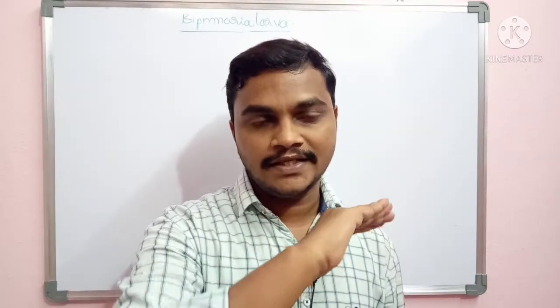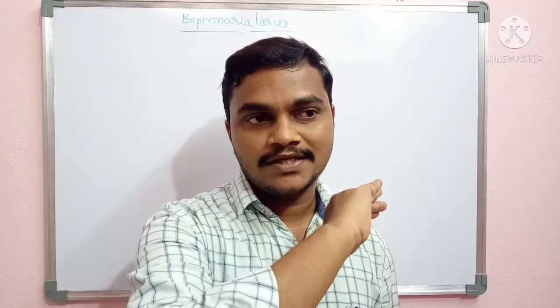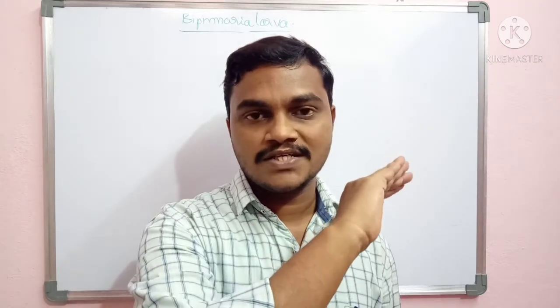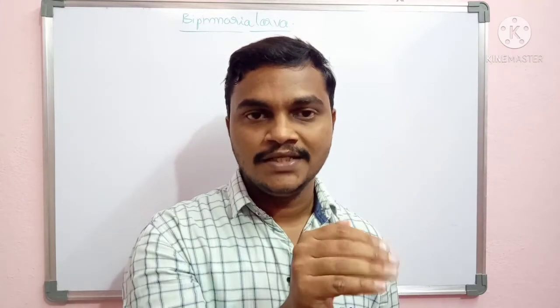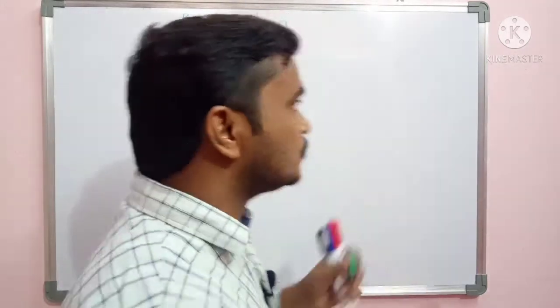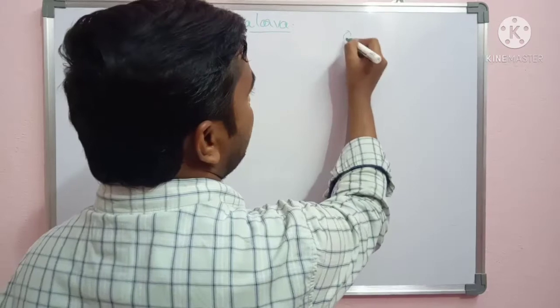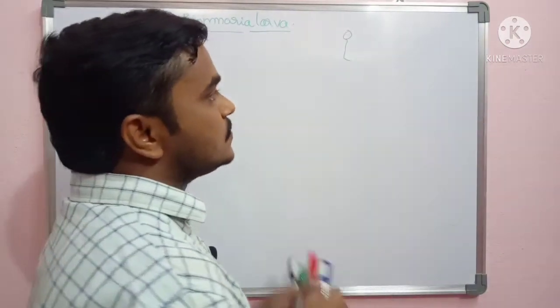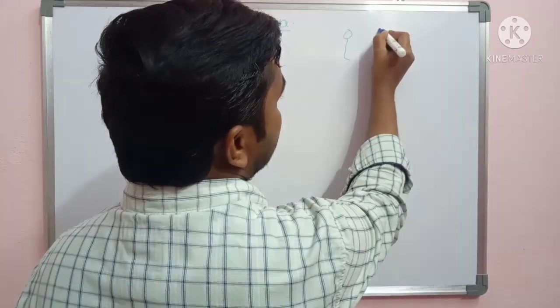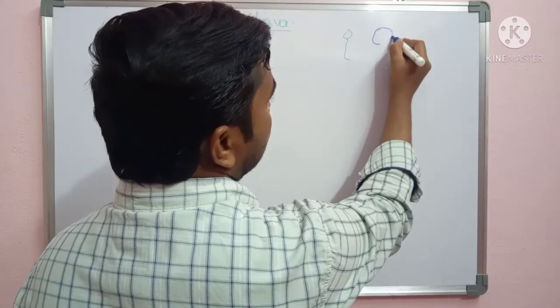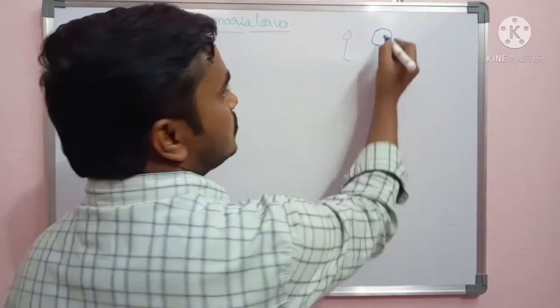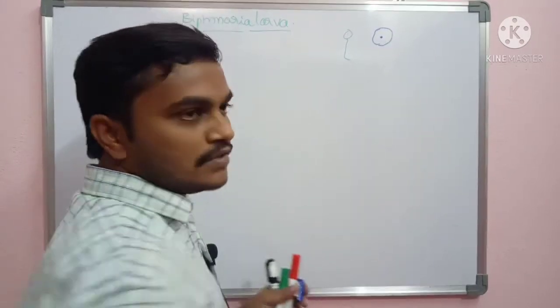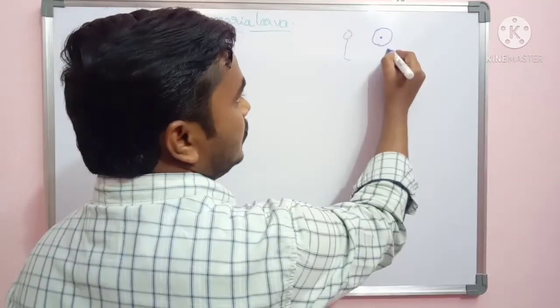Sperm and ova are released. The sperm is produced from one starfish and the ovum is produced by another starfish. These gametes fuse together to form a zygote.